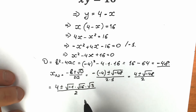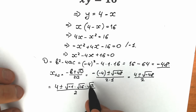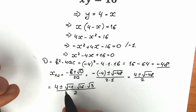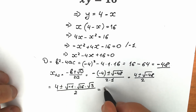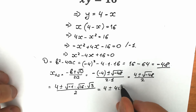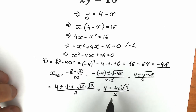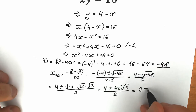We can simplify by writing minus 48 as minus 1 times 16 times 3. So square root of 16 equals 4, and square root of minus 1 equals i. As a result we have (4 plus or minus 4i times square root of 3) divided by 2, which simplifies to 2 plus or minus 2i square root of 3.